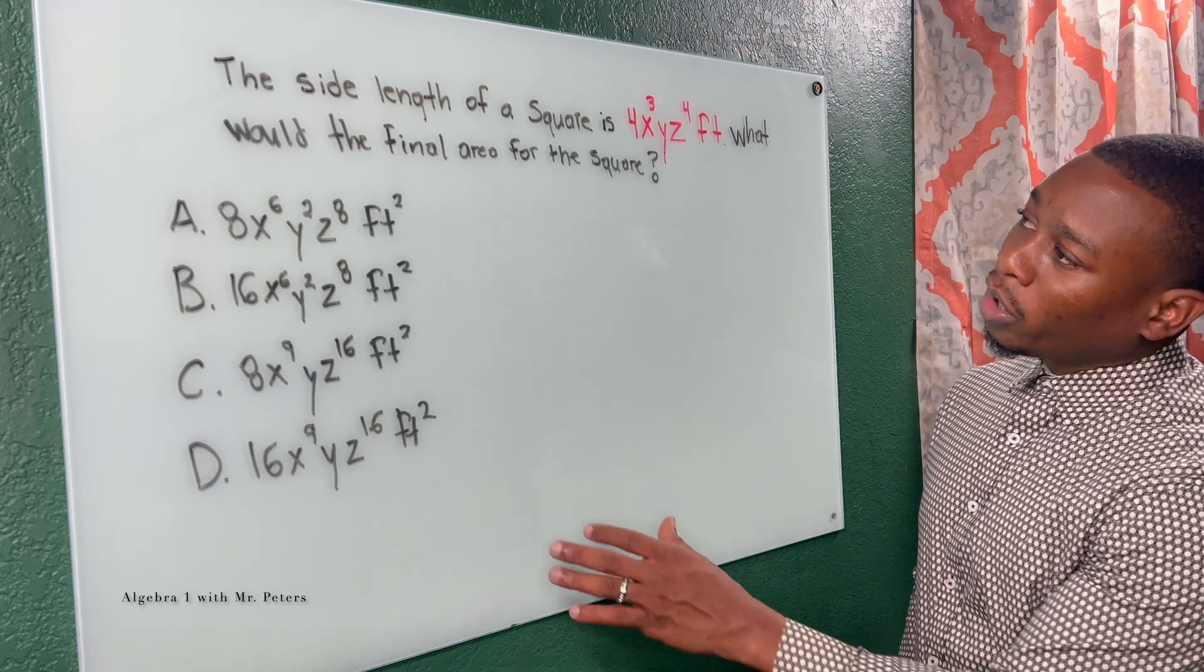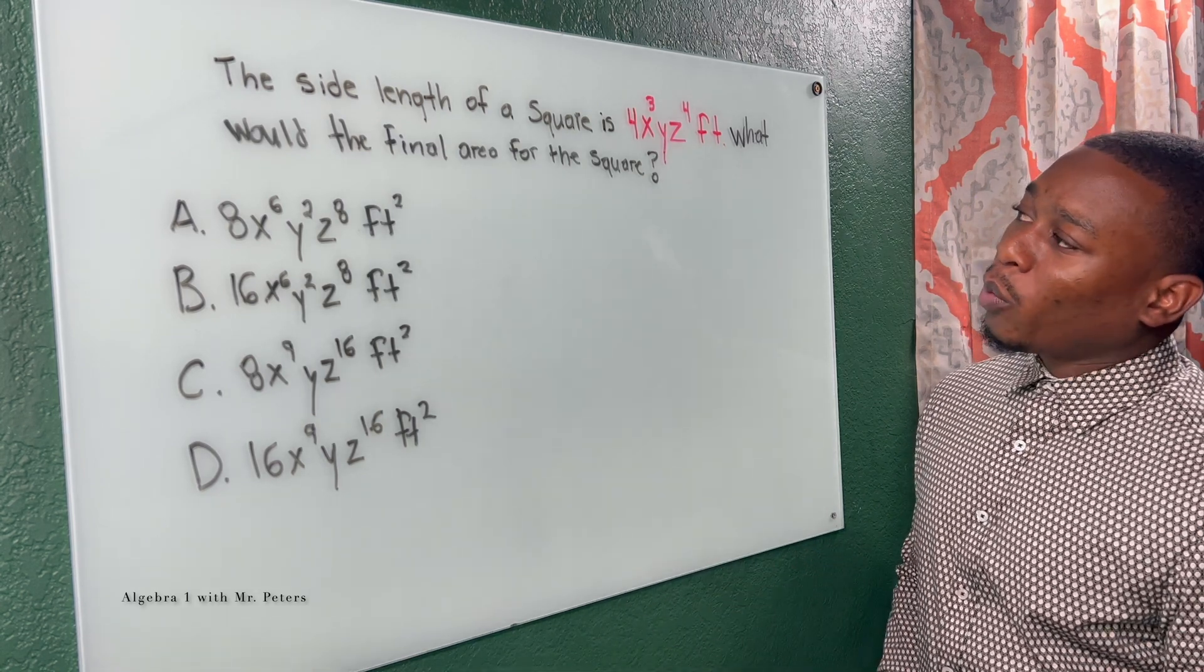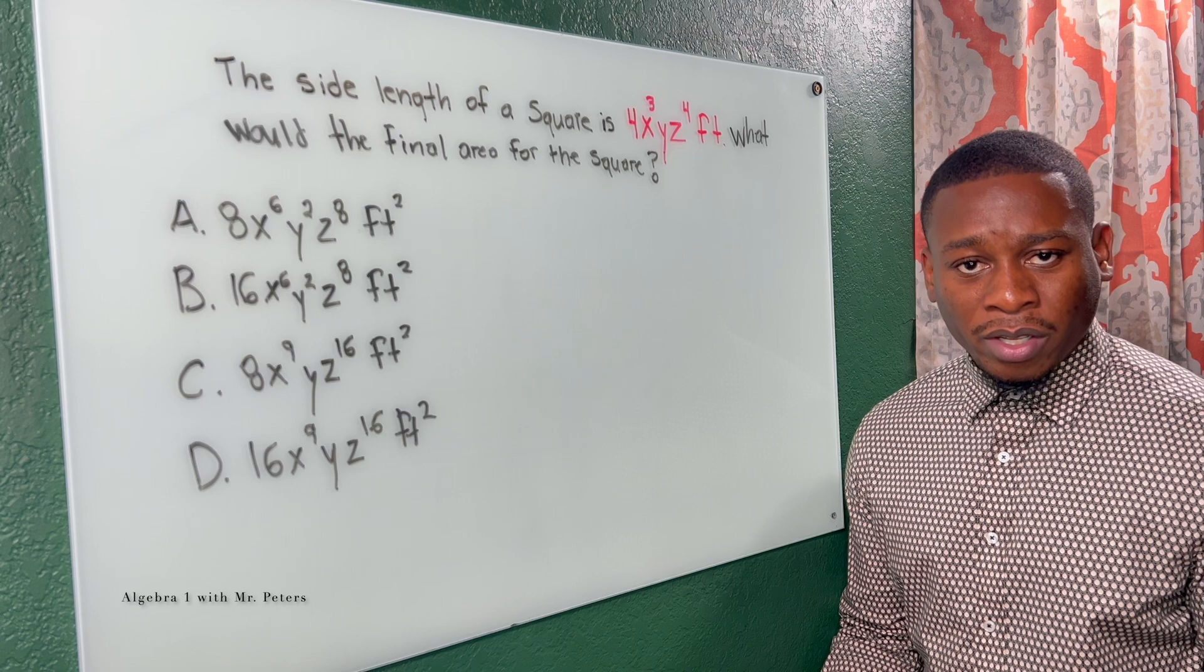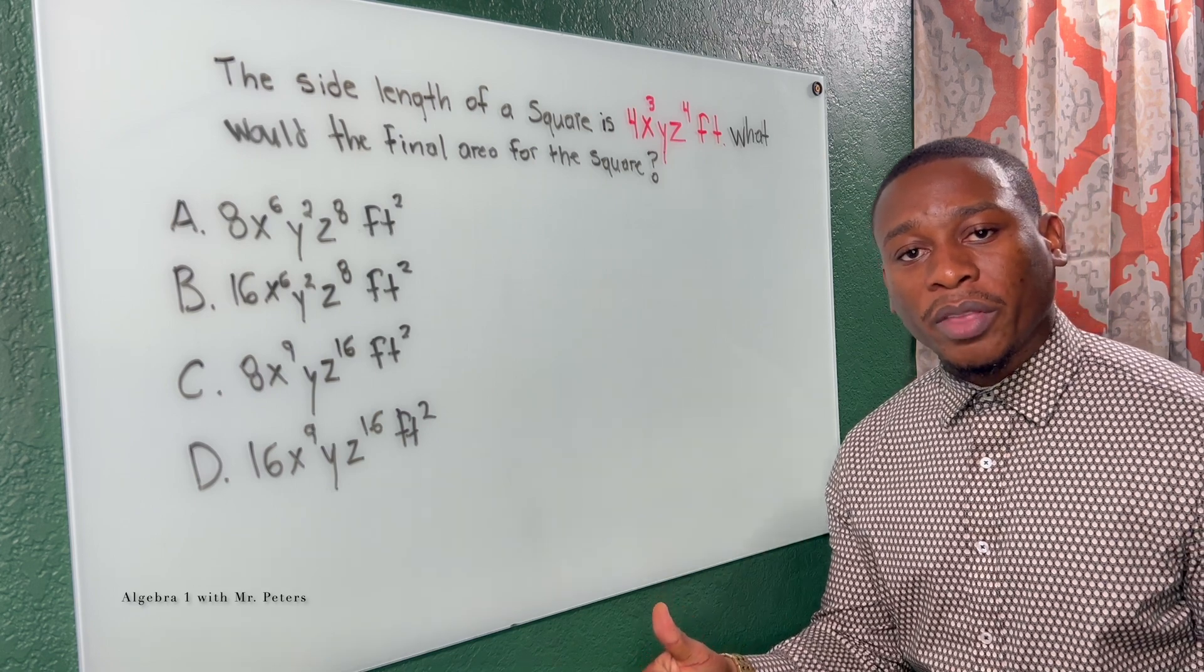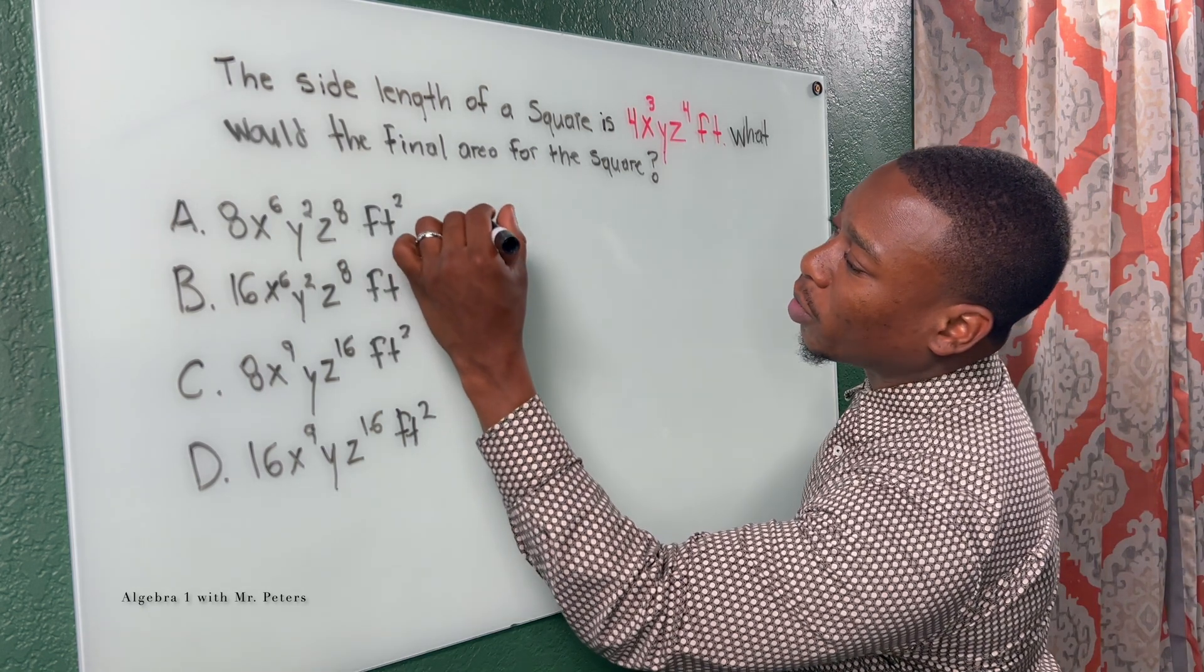In episode two today, we're looking at the side length of a square and we're trying to figure out what is the area. So not only are we dealing with area, we're also dealing with properties of exponents.